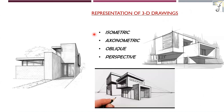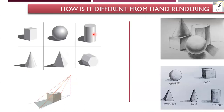We can show sciography with the help of isometric, axonometric, oblique, perspective — any form. This is how we implement it on drawing sheets. Now, can you tell me what is the difference between hand rendering and sciography? We can do sciography by hand rendering, but there is a different difference. Can you identify it?